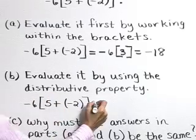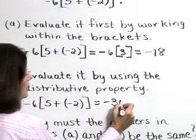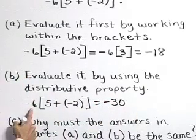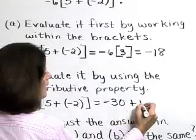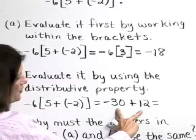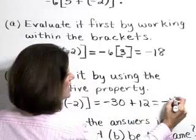-6 times 5 is -30, and -6 times (-2) gives a positive 12. Now, adding these terms gives -18.